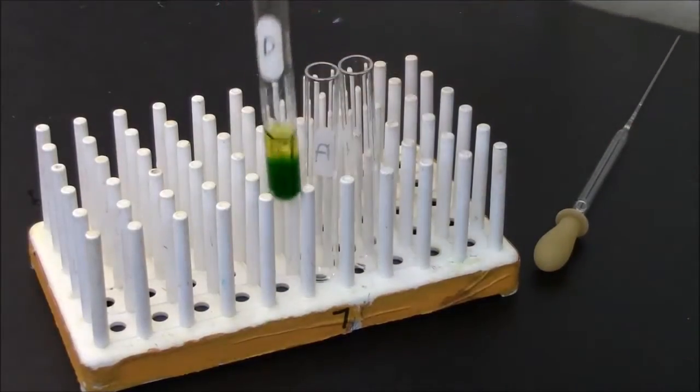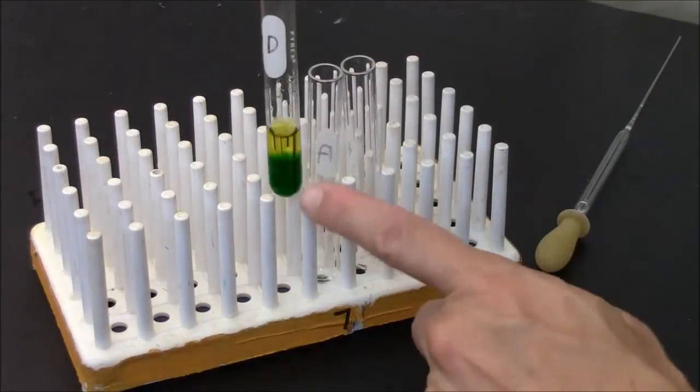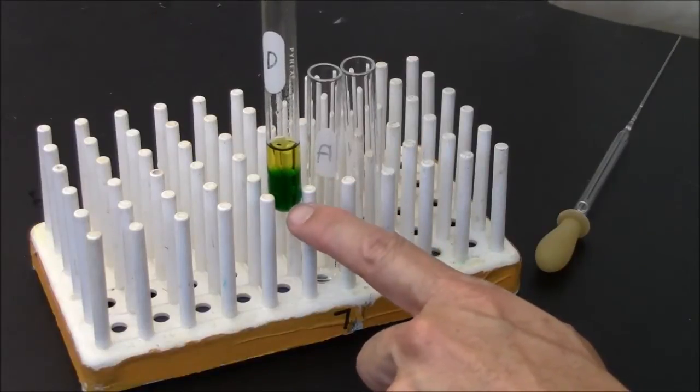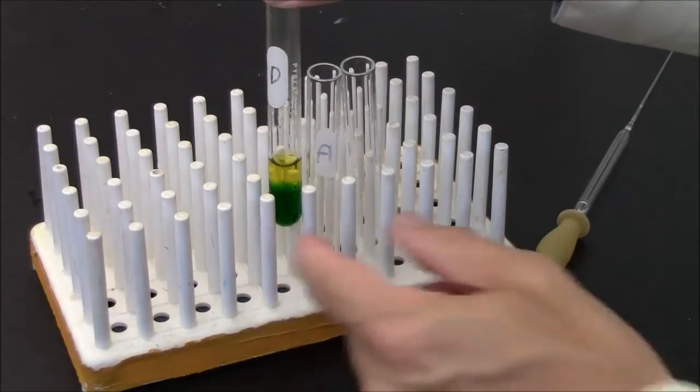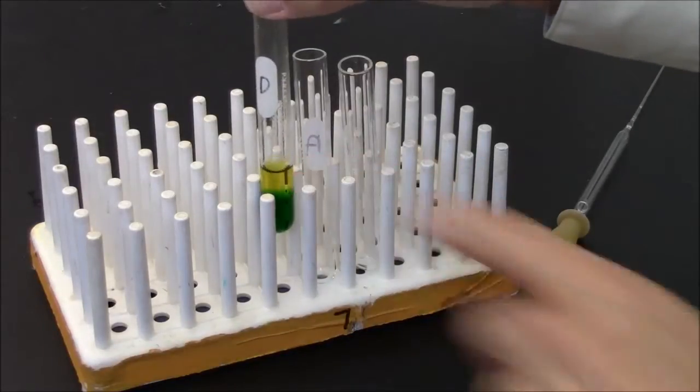There are two possible strategies I could use to separate the layers from this test tube. If I want to get a pure sample of the bottom, I'll put my pipette all the way to the bottom of the tube and pull from there. If I want a pure sample of the top, I'll pull from just the top layer.